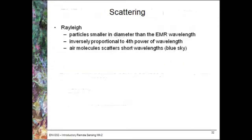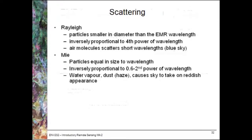Rayleigh scattering causes blue sky. The amount of scattering is inversely proportional to the fourth power of wavelength, which basically means that the shorter the wavelength, the more affected by this type of scattering. This really affects particles smaller in diameter than the electromagnetic wavelength — so for short wavelength blue light, it is being affected by small particles in the air.